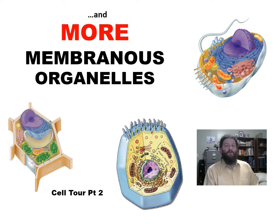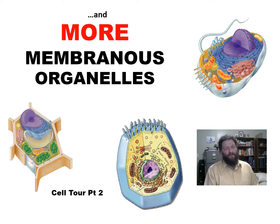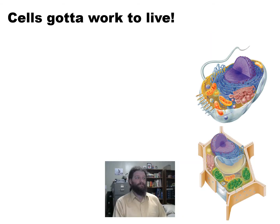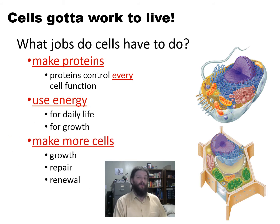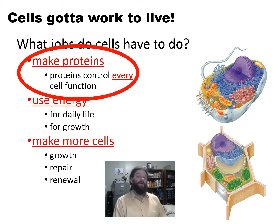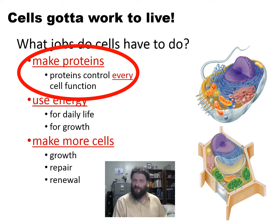In the previous video, Part 1, we introduced the cell itself, the difference between prokaryotes and eukaryotes, and how that difference really lies mostly on the presence of membrane-bound organelles. We talked about the endomembrane system. In this video, we're going to move from the endomembrane system into some of the other membrane-bound organelles within the cell. We talked about how cells have to work to live and that they have basic jobs: making proteins, using energy, and making more cells. Last video, we spent quite a bit of time talking about how proteins are made and processed and sent through the endomembrane system for secretion. Today, we're going to finish with protein construction and what some of those proteins will do. In the next video, we'll talk about the use of energy, and we'll get into making more cells when we start talking about reproduction and mitosis.